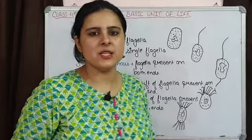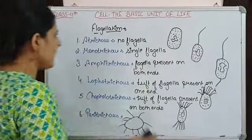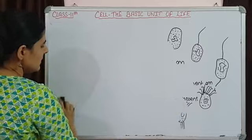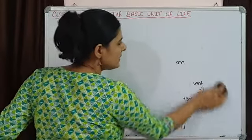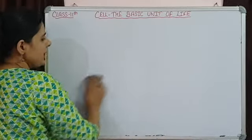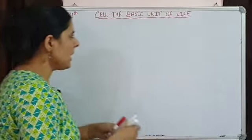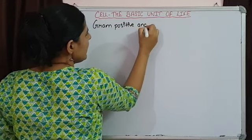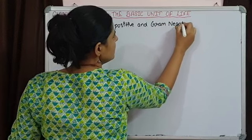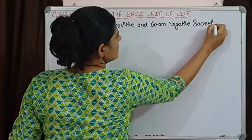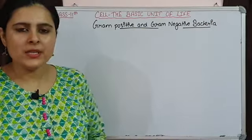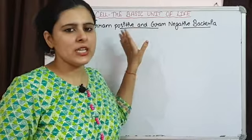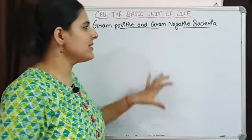These bacterial cells, depending on the gram stain they take — the reaction of the bacterial cell with the gram stain — we distinguish them into two categories. This was done by a scientist named Christian Gram. Bacteria are either gram-positive or gram-negative. Let us see how we can differentiate between gram-positive and gram-negative bacteria.